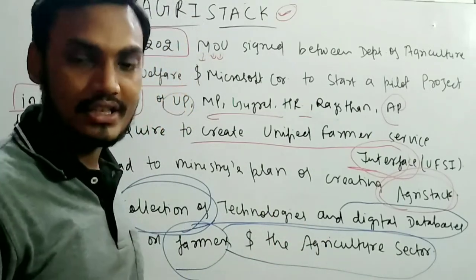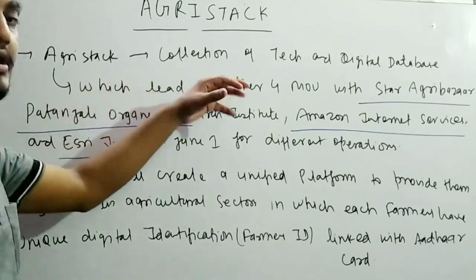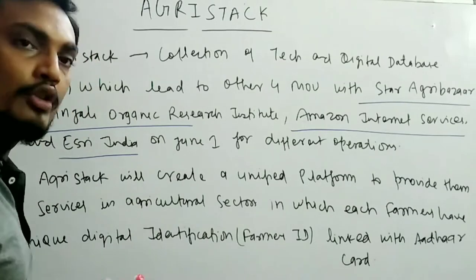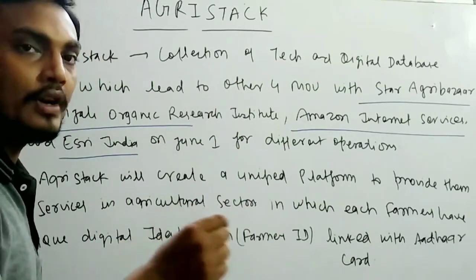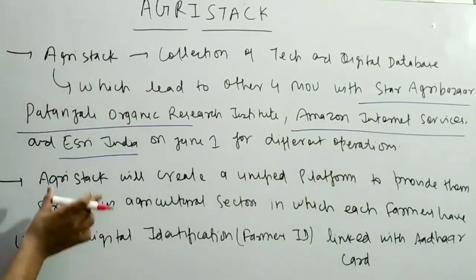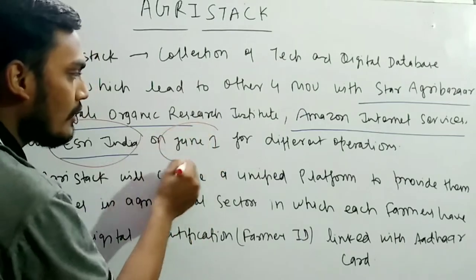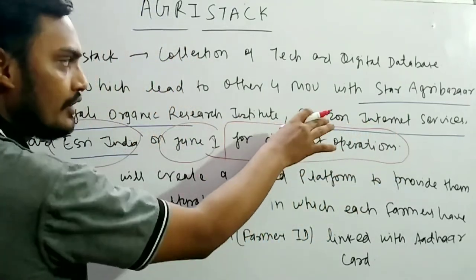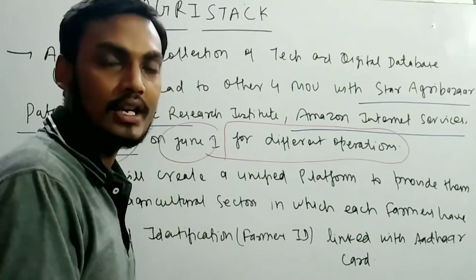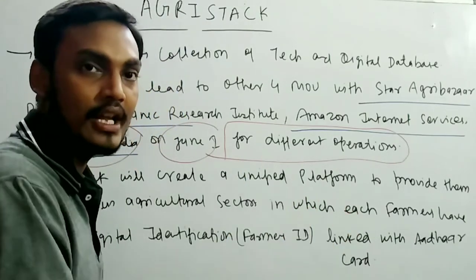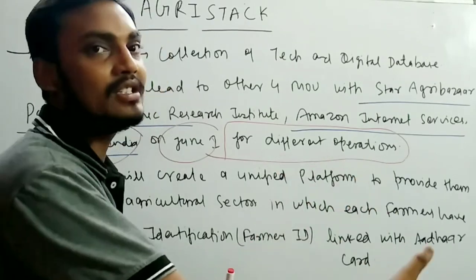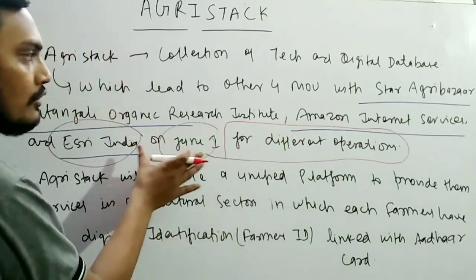After the MoU with Microsoft to create a digital database for farmers, further MoUs were signed with Star Agri-Bazaar, Patanjali Organic Research Institute, Amazon Internet Services, and ESRI India on June 1 for different operations. The main job through these is to create different digital databases, a geo-hub, an agricultural hub in India, and provide soil nutrition and research information to farmers.